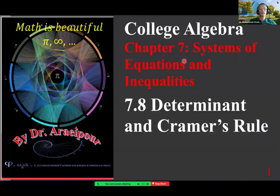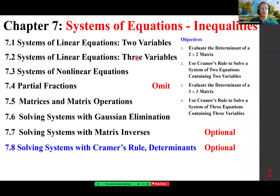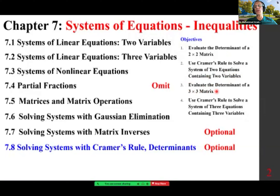Good morning class. Here's Chapter 7, Systems of Equations and Inequalities, Section 7.8, Determinant and Cramer's Rule. We cover systems of linear equations in two and three variables, non-linear equations, matrices, Gaussian elimination, and now solving systems of equations with Cramer's Rule and Determinants. The objectives are to evaluate the determinant of a 2x2 matrix, use Cramer's Rule to solve a system of two equations containing two variables, evaluate the determinant of a 3x3 matrix, and use Cramer's Rule to solve a system of three equations containing three variables.